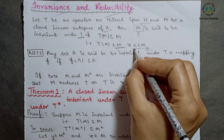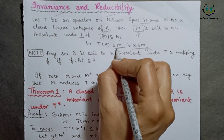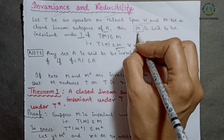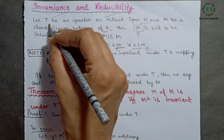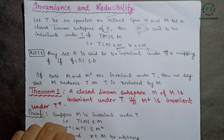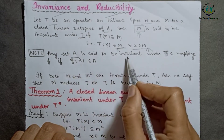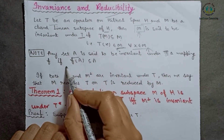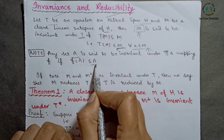If T(M) is a subset of M, i.e., Tx belongs to M, then we say M is an invariant set under operator T. Similarly, any set A is said to be invariant under a mapping f if f(A) is a subset of A.